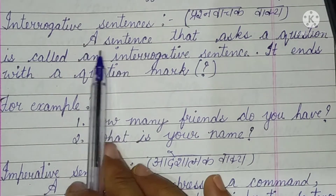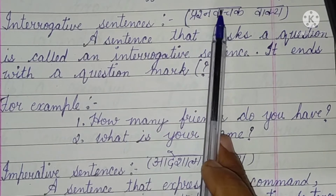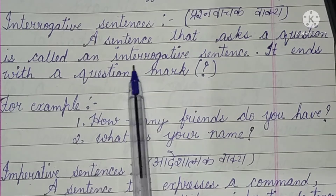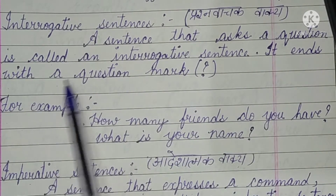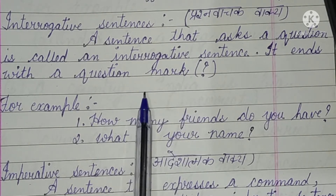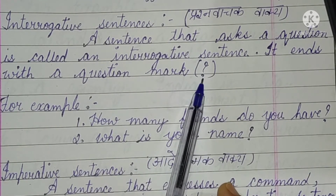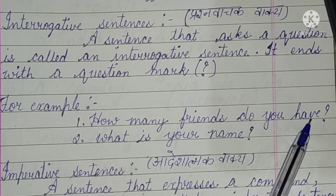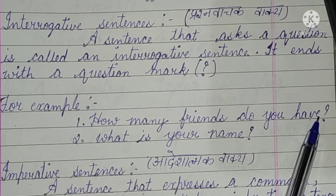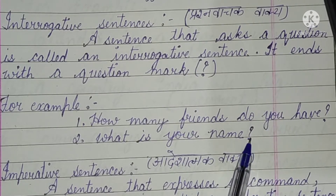The second type is interrogative sentence. It is a question — it ends with a question mark. Jaise koi question puchha ja raha hai to question mark ka chinh lagana hota hai. For example: 'How many friends do you have?' — question mark at the end. Second: 'What is your name?' — aapka kya naam hai — question mark at the end.